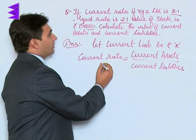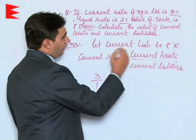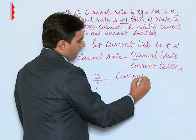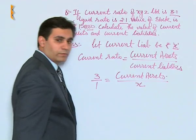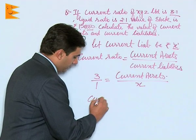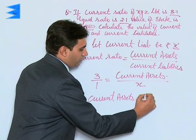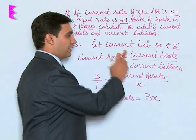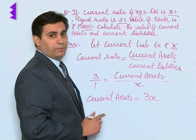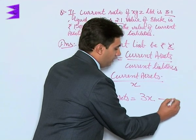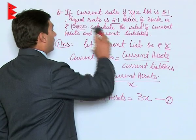In this question, current ratio is given to be 3:1. Putting 3:1 and current liabilities as X, and cross multiplying, we get the relation: current assets = 3X, where X implies current liabilities. Let us mark this as equation number 1.